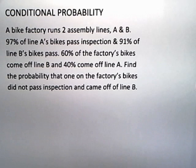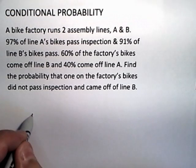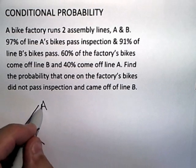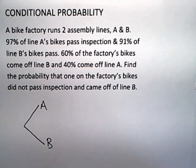Now, this is an absolutely perfect problem for using a tree diagram. I wouldn't even dream of doing it any other way. There are two lines, assembly line A and assembly line B in this factory.